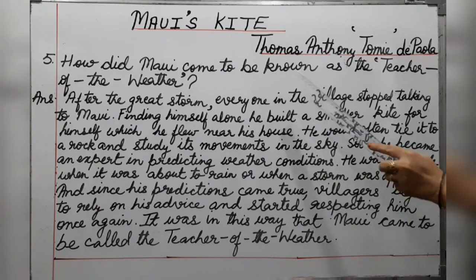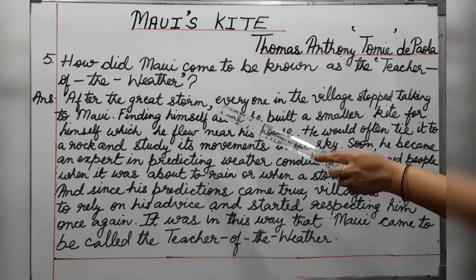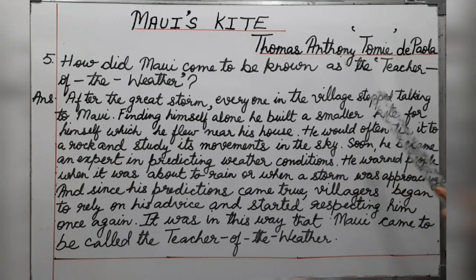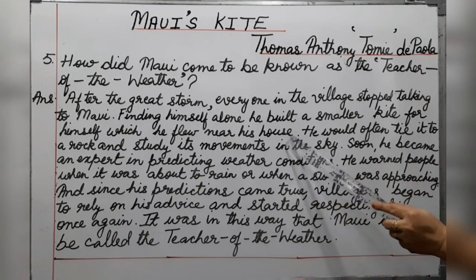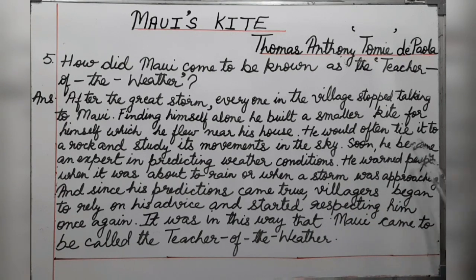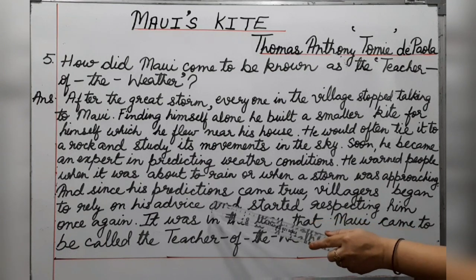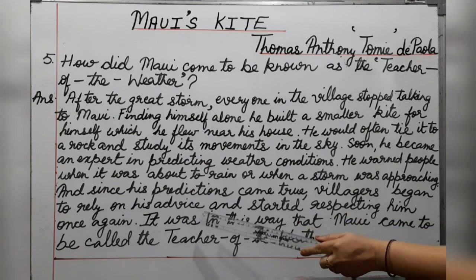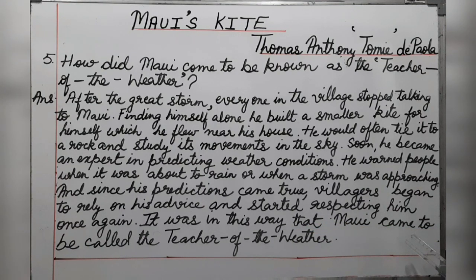Question 5: How did Maui come to be known as the teacher of the weather? After the great storm, everyone in the village stopped talking to Maui. Finding himself alone, he built a smaller kite, which he flew near his house, often tying it to a rock and studying its movements in the sky. Soon he became an expert in predicting weather conditions. He warned people when it was about to rain or when a storm was approaching. Since his predictions came true, villagers began to rely on his advice and started respecting him once again. It was in this way that Maui came to be called the teacher of the weather.